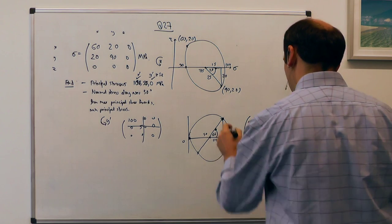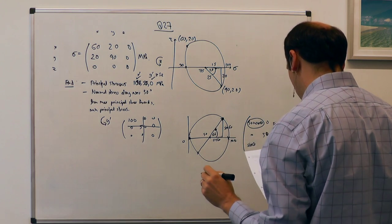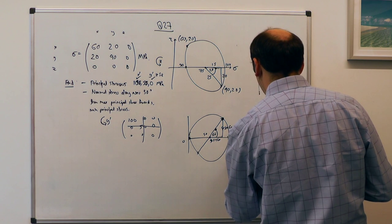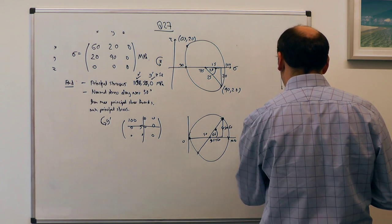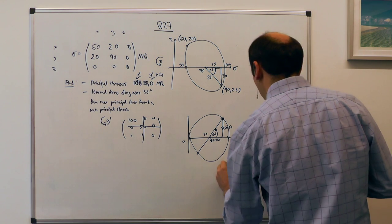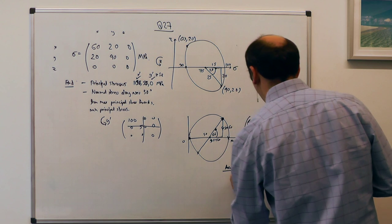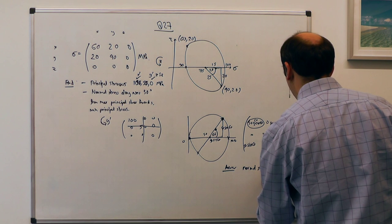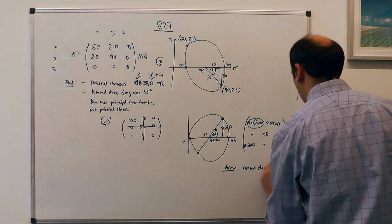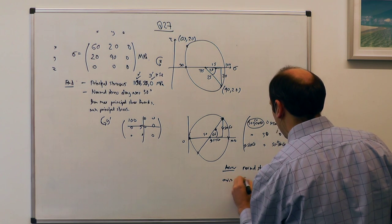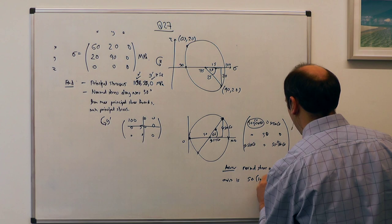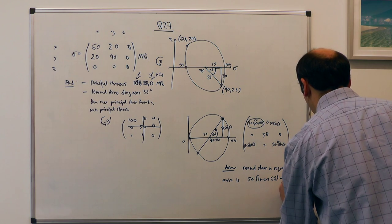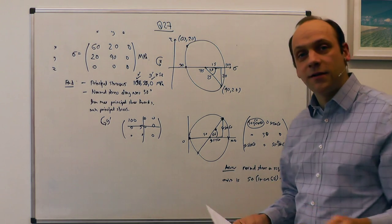And we want the normal to that one. So we want this number, which is 50 plus, oh, sorry, 50 cos 60. 50 sin 60. I need to put my 50 in there. 50. So my normal stress, my answer is that my normal stress on the requested axis is 50 times 1 plus cos 60 degrees. And cos 60 is a half. So that's 75 megapascals. And that's the solution to question 27.